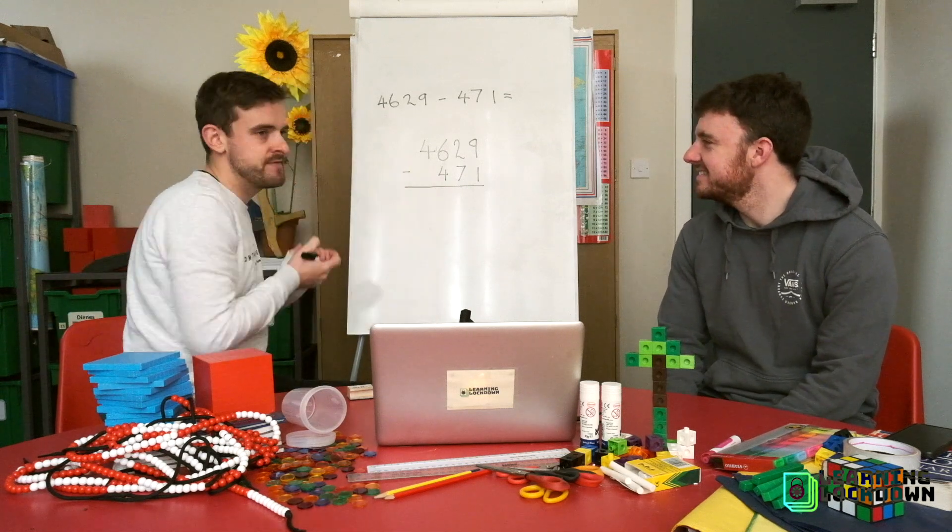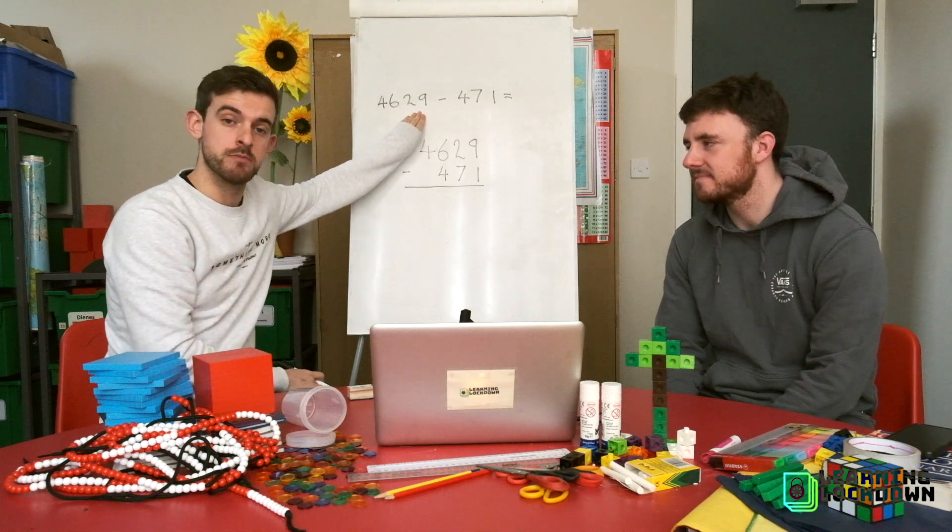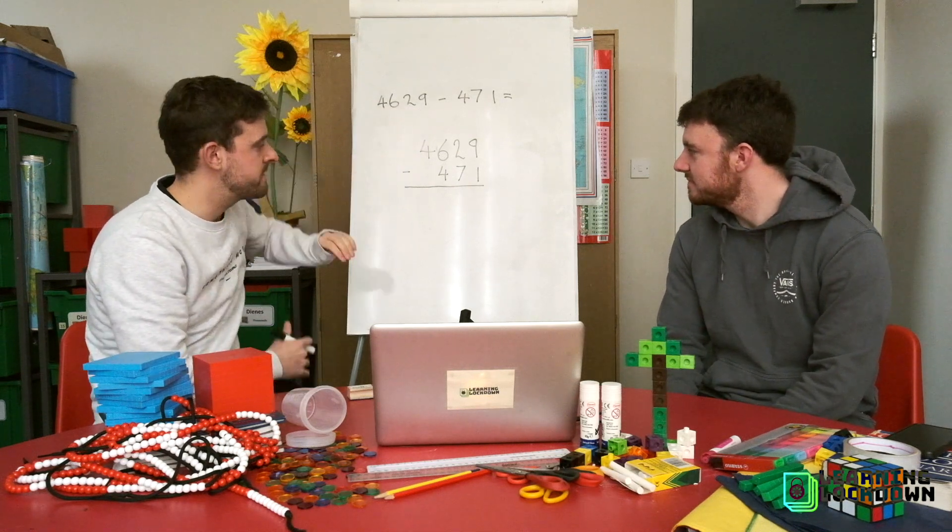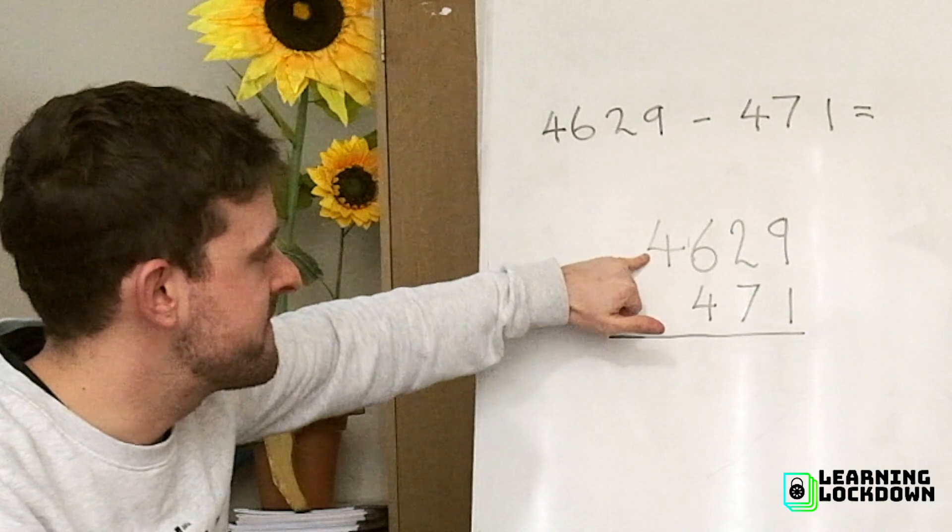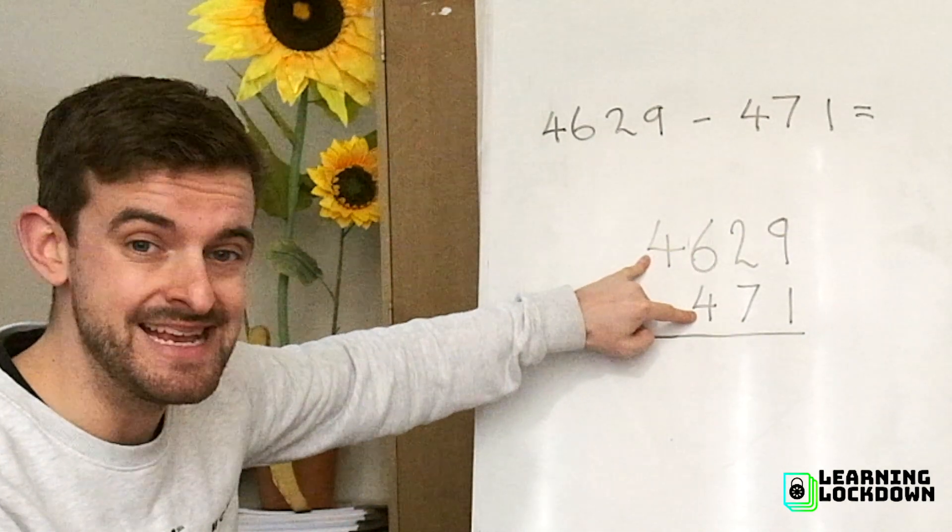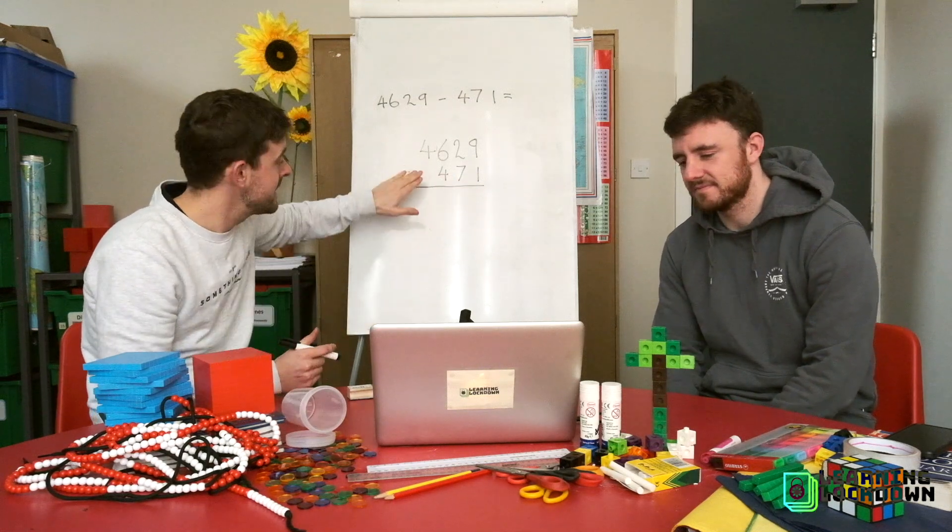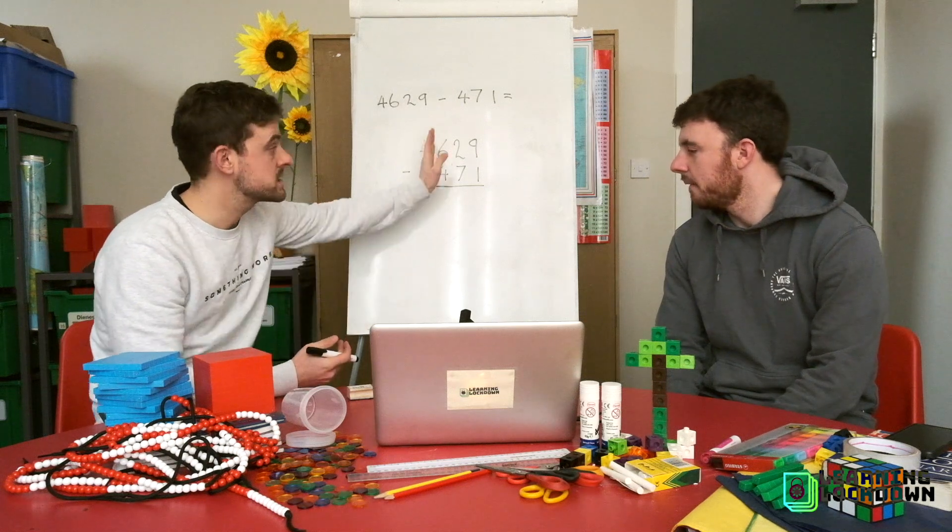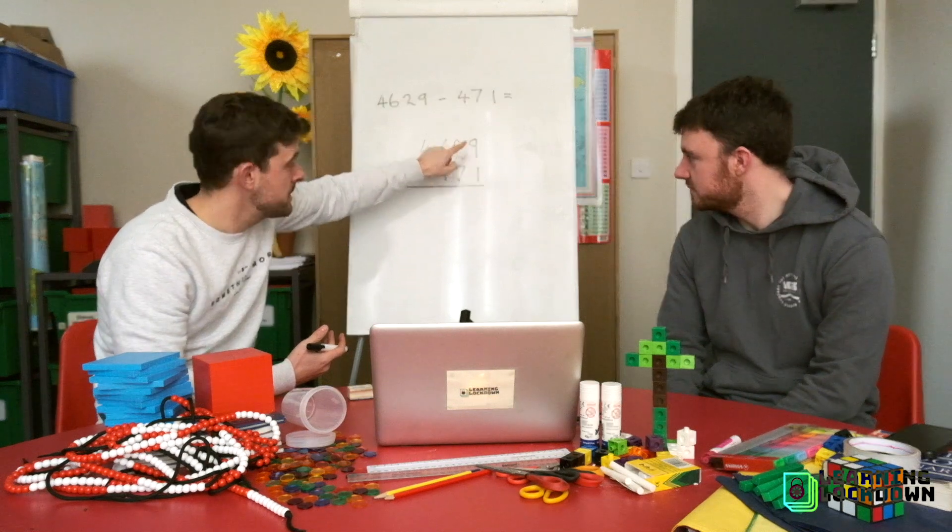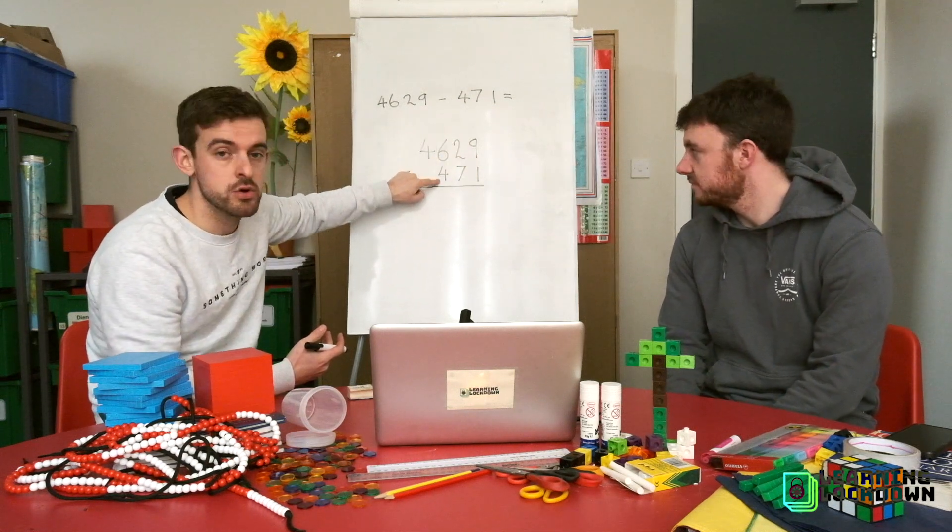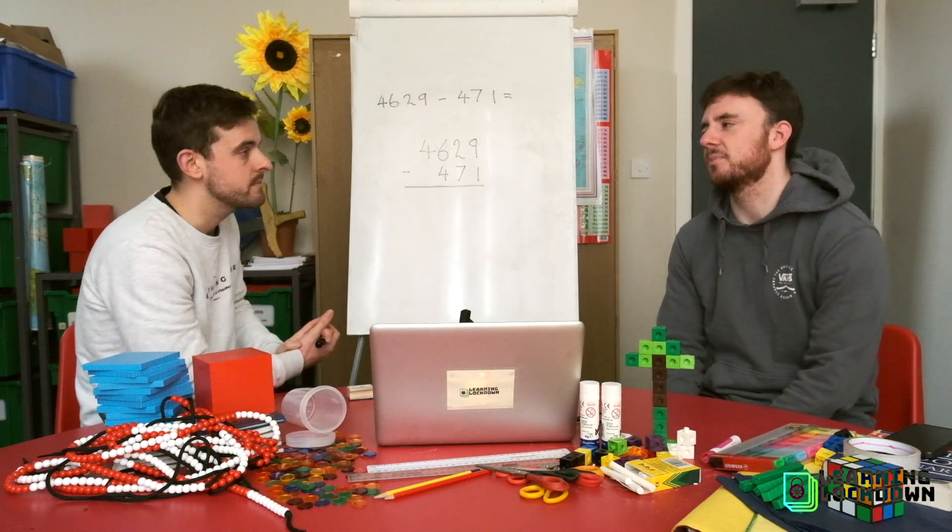Well because place value is a tricky little mistress and you've got to make sure you obey her laws at all times. So let's just have a look at how we've set it out here. We've taken our 4 digit number because it becomes first in our number sentence and we've put it on top. And we're taking away our 471 but look at how I've lined it up. I haven't lined up by accident my 4000s with my 400s. Although that would be easy to do, I've made sure that because this number 471 has no 1000s, I leave that place value column blank.